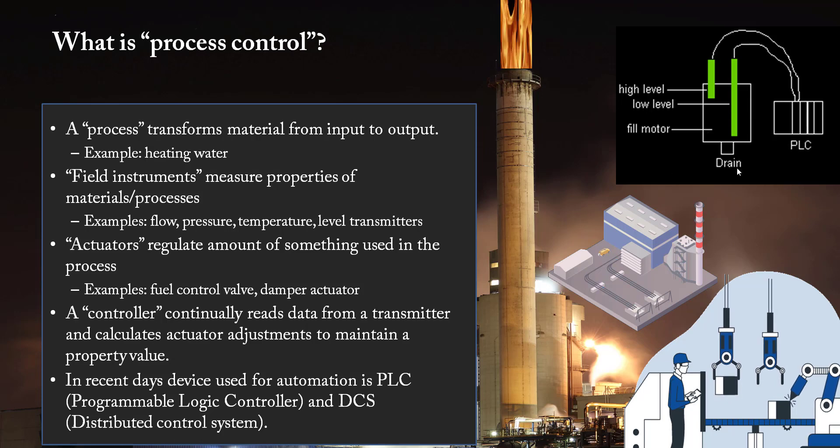For instance, if you see here we have this example, very simple example. We have high level, we have low level, and we have fill motor and drain motor. So if our high level is reached, then our drain system would start working. And the time when we reach to low level, then our fill motor will start. So it's very simple. Same is the case here. These are two instruments like high level and low level. These are limit switches, these are instruments.